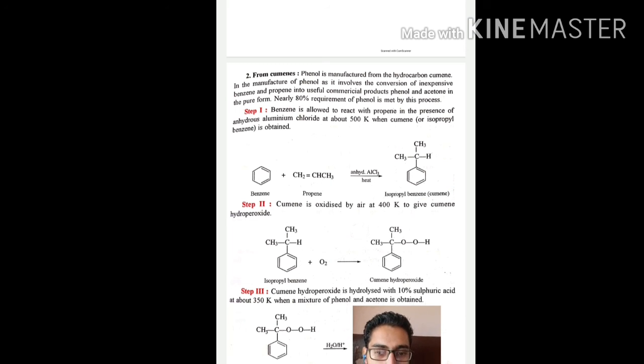Nearly 80% of phenol requirement is met by this process. In this, benzene first reacts with propene at temperature 500 Kelvin and anhydrous aluminum chloride to form cumene, which we call isopropyl benzene.